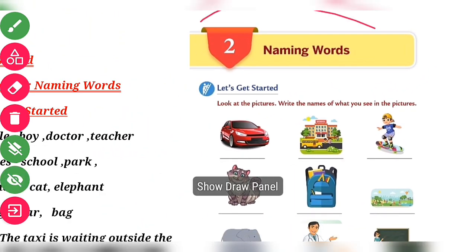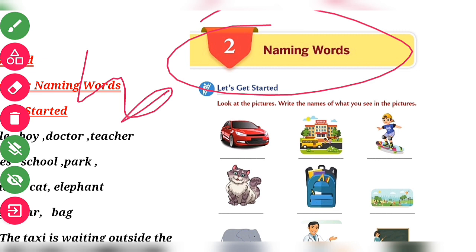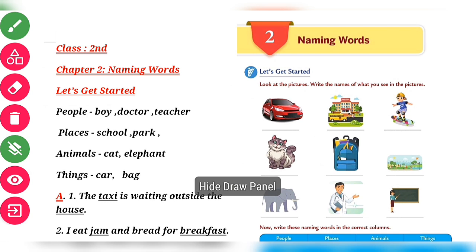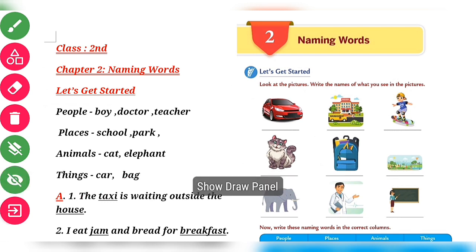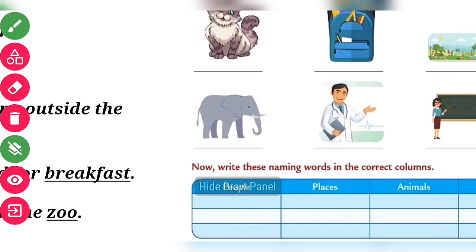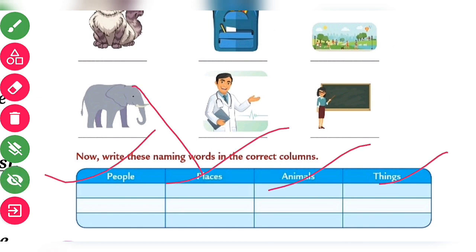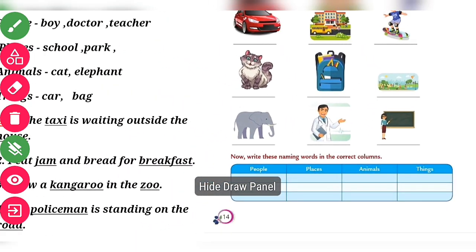As the chapter says, the naming words — here we are going to study nouns, also called naming words, which we have already studied in class. Now write these naming words in the correct column: people, places, animals, and things. With the help of this picture, you have to write these things.